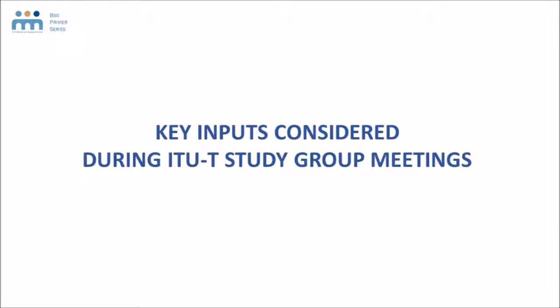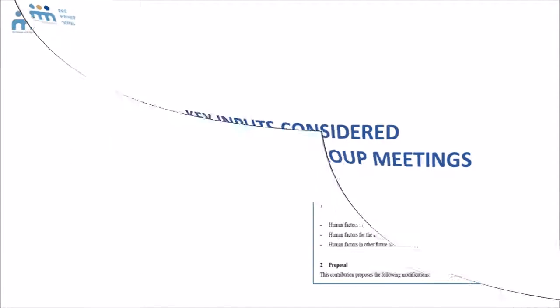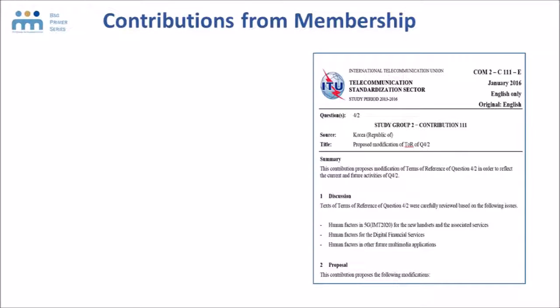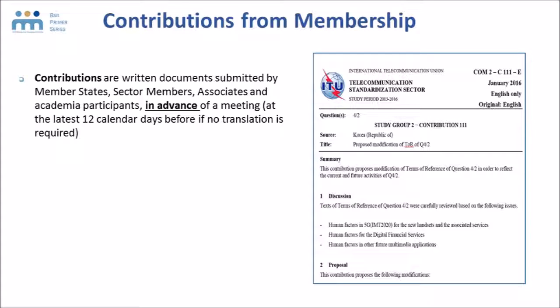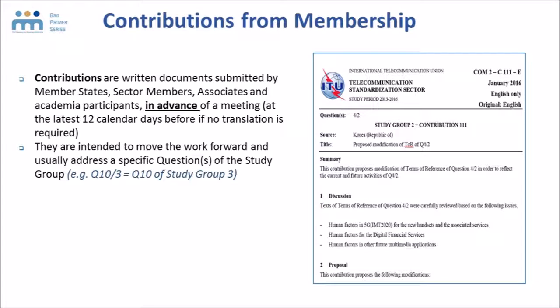Key inputs considered during ITU-T study group meetings: the first and most important input are contributions from membership. Contributions are written documents submitted by member states, sector members, associates, or academia participants in advance of a meeting. They are intended to move the work forward, so it's very important for them to include a clear proposal at the end of the contribution.